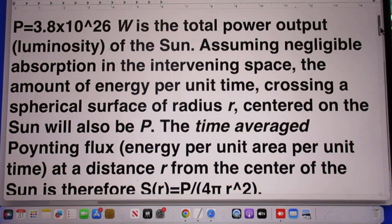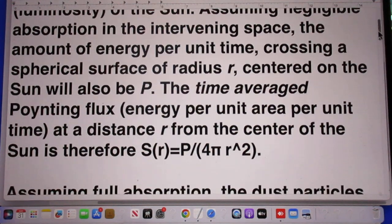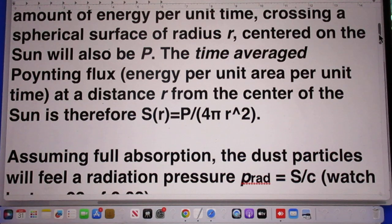The time average pointing flux, which is the energy per unit area per unit time, at a distance R from the center of the sun is therefore obviously P divided by 4 pi R square. That is trivial.